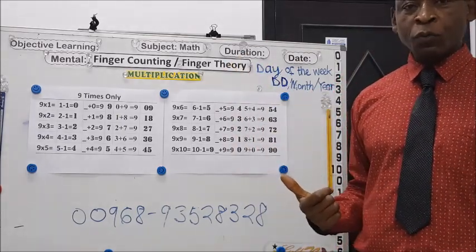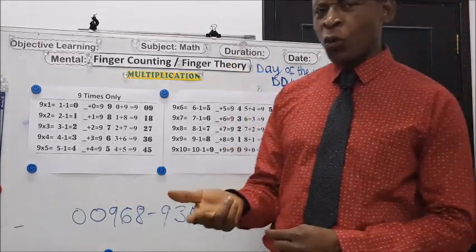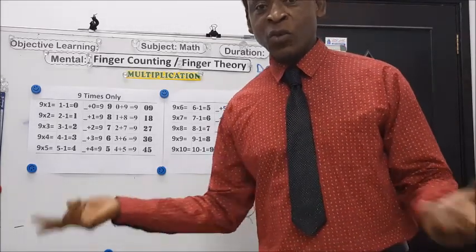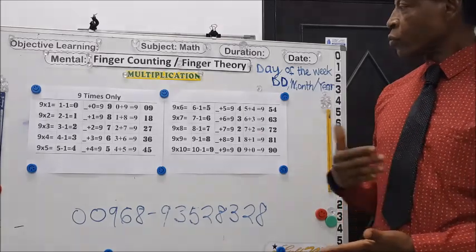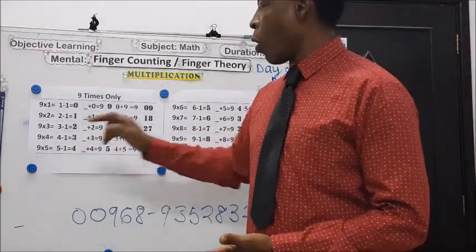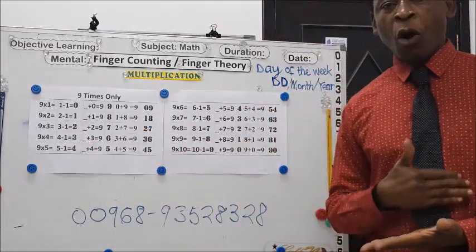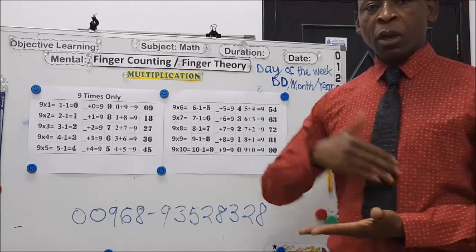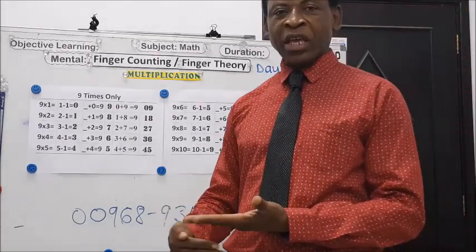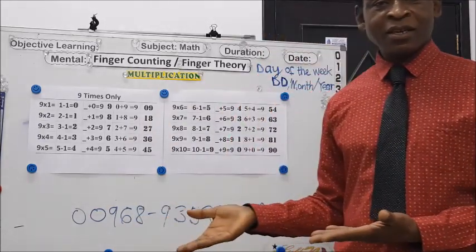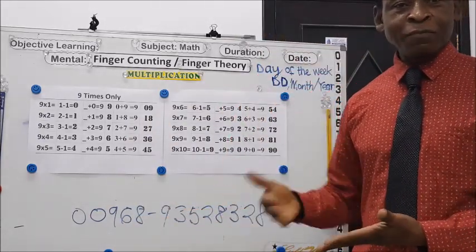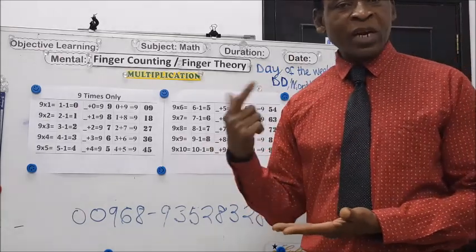That is 2. What number should I add to 2 and I'll get 9? That is 7. So 27. 9 times 4: you subtract 1 from the 4, you get 3. What number should I add to 3 and I'll get 9? 6. So 36. 9 times 4 is 36. 9 times 5, I'll subtract 1 from